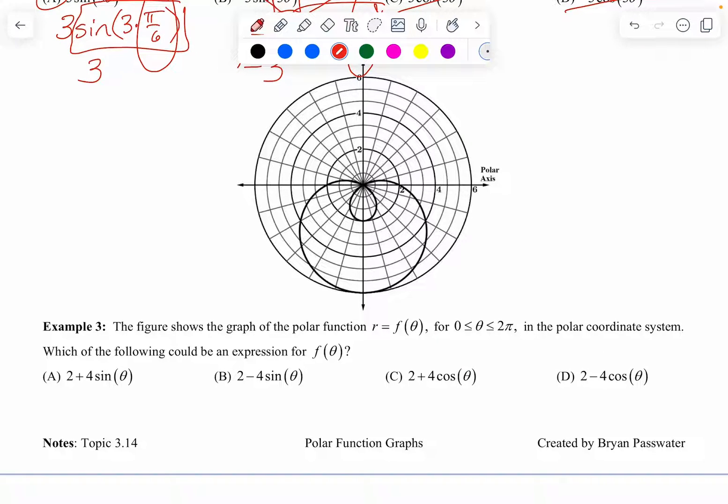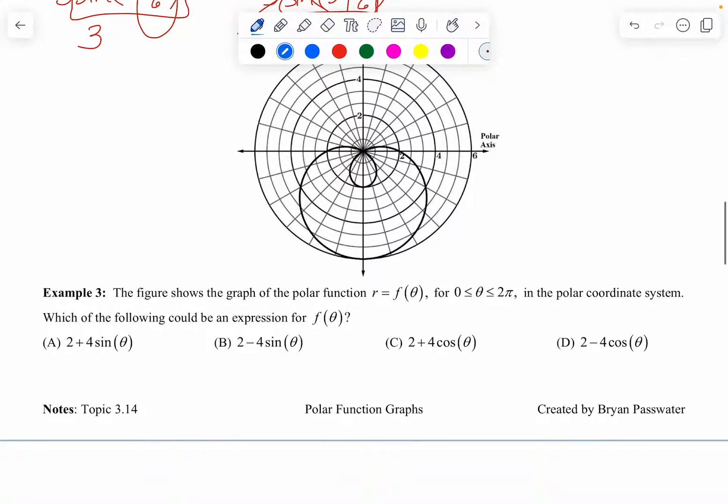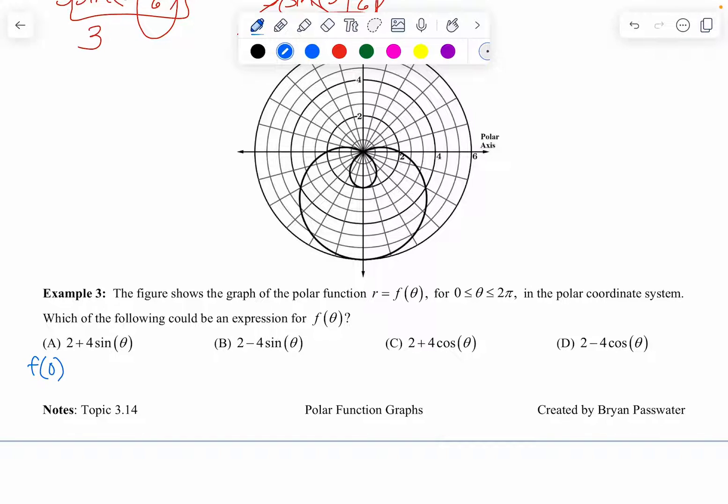Okay. Let's look at the next one. This is one of those limaçons with an inner loop. And sometimes I end up getting these memorized and sometimes I don't. I remember that the cardioid has these two values as the same. Like the A, if you think of it as A plus B sine theta or cosine theta, when A equals B, it's a cardioid. I can't always recall very well, but okay. I think that's right, but this is not a cardioid and that wasn't one of the choices. So that wasn't very helpful. Point being, I don't have all the little intricacies memorized because it just doesn't really serve me well.